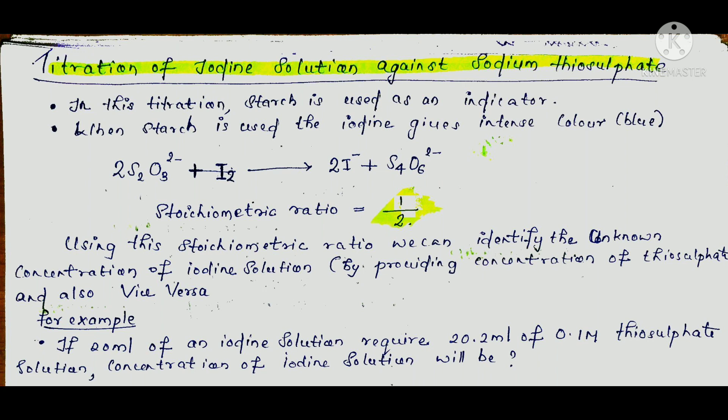The first one is the titration of iodine solution against sodium thiosulfate. In this titration, starch is used as an indicator. When starch is used, the iodine gives an intense blue color.